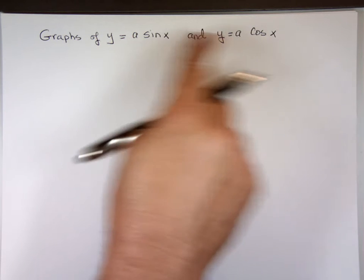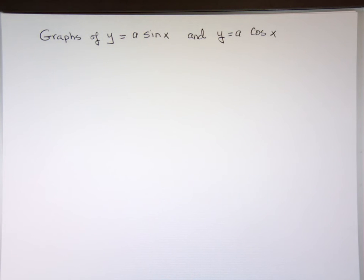We are going to figure out what the 'a' in the front does when you have a number like 2 sine of x, or 1 half cosine x. What is that number going to do?